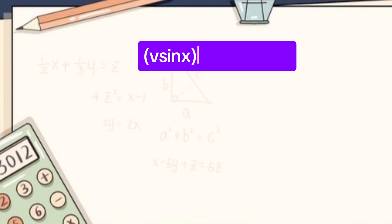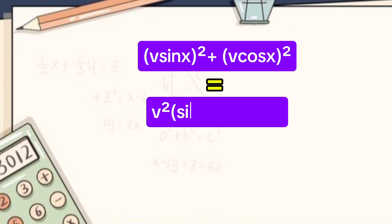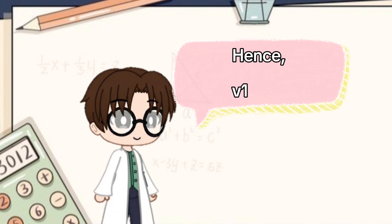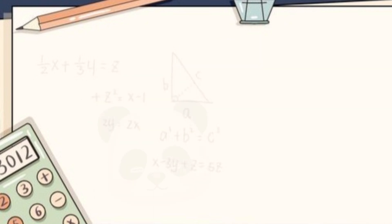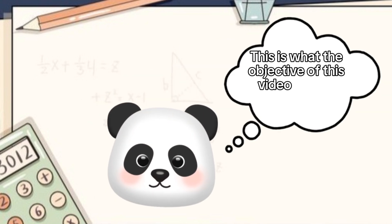So the total area of the square of the components of resultant velocity is v sin x square plus v cos x square, which is equal to v square multiplied by sin square x plus cos square x, which equals to v square. Hence, v1 square is equal to v square. So we get that the magnitude of resultant velocity remains constant. This is what the objective of this video was to prove.